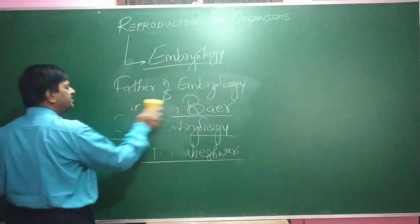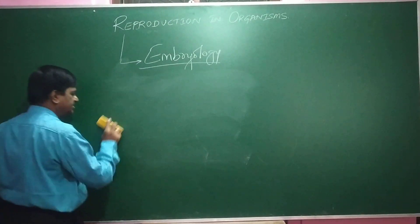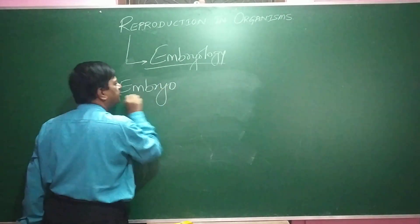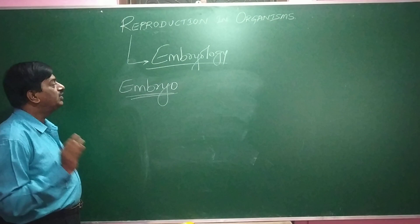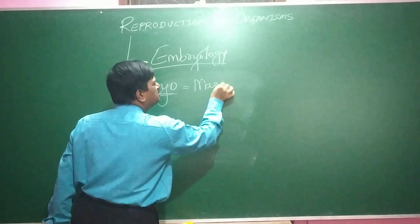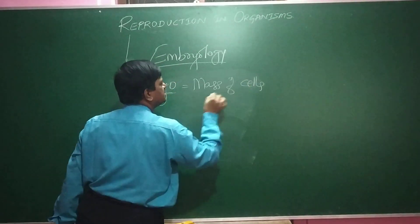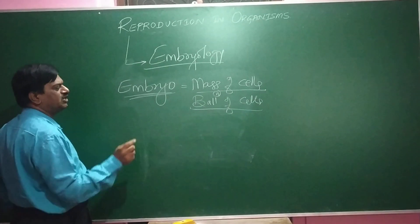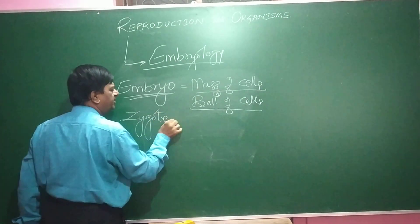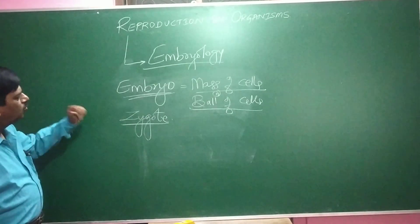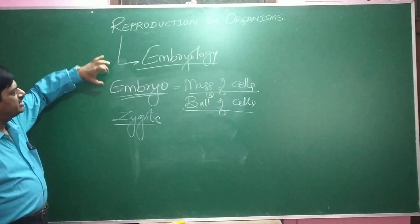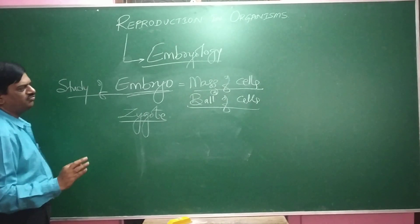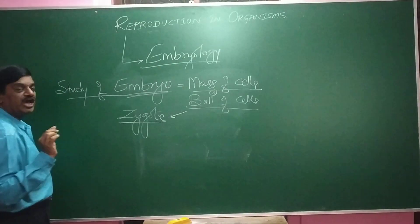What does embryology mean? Embryology is the study of the embryo. This branch deals with the study of the embryo. The word embryo means a mass of cells — we use the term 'ball of cells.' This ball of cells or mass of cells is produced from a zygote. So embryology deals with the study of the embryo — a ball of cells formed from the zygote.